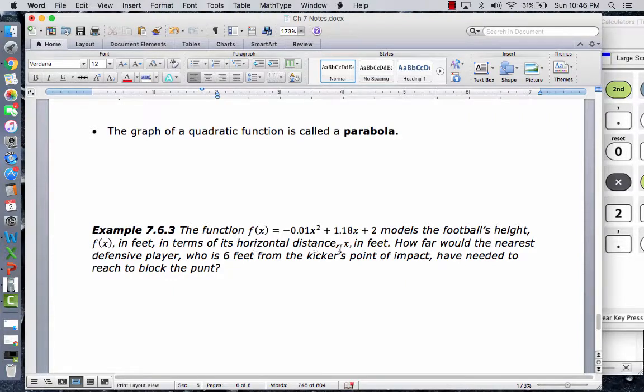In terms of its horizontal distance x in feet. So x is the horizontal distance that we plug in, and then that will give us a vertical distance, a height, f of x. So how far would the nearest defensive player who is 6 feet from the kicker's point of impact have needed to reach to block the punt? If you're standing 6 feet away, how high is the ball at that point?